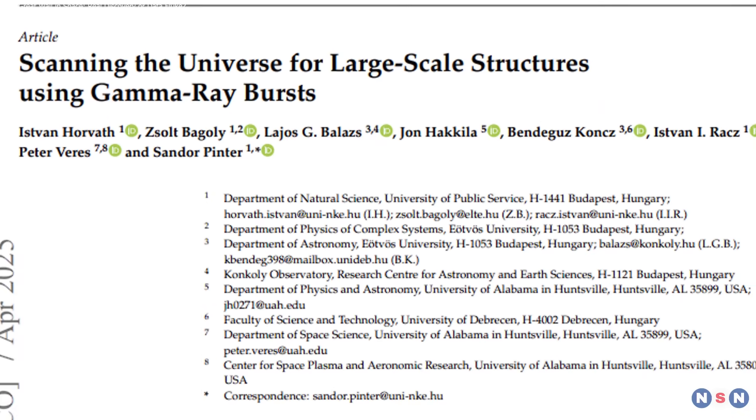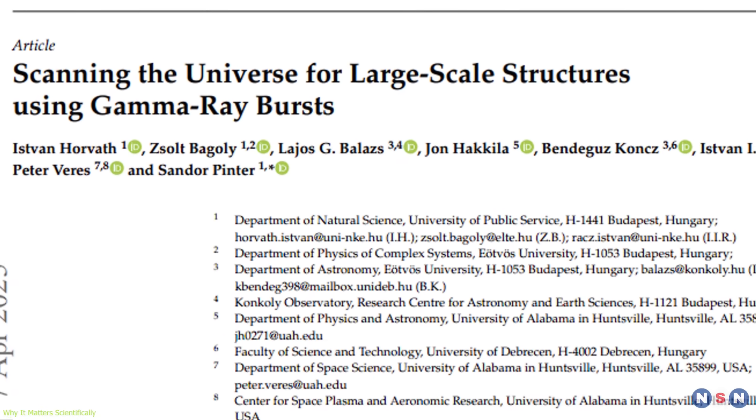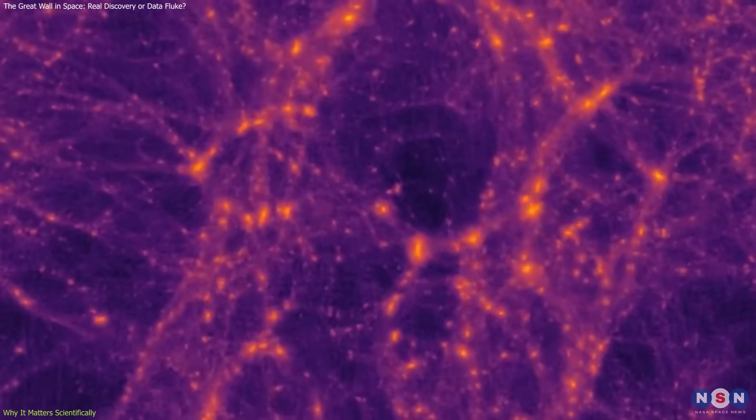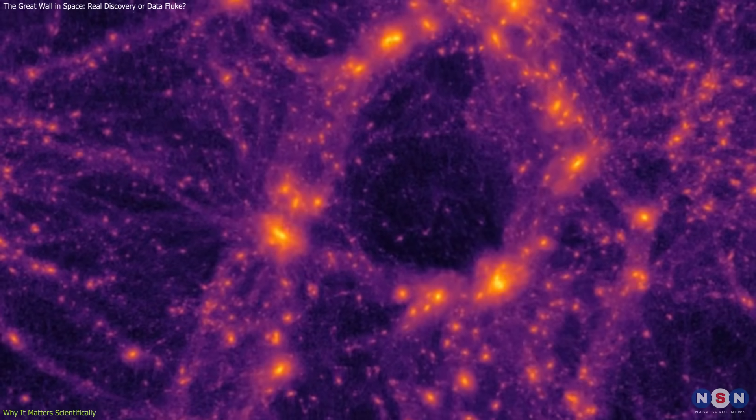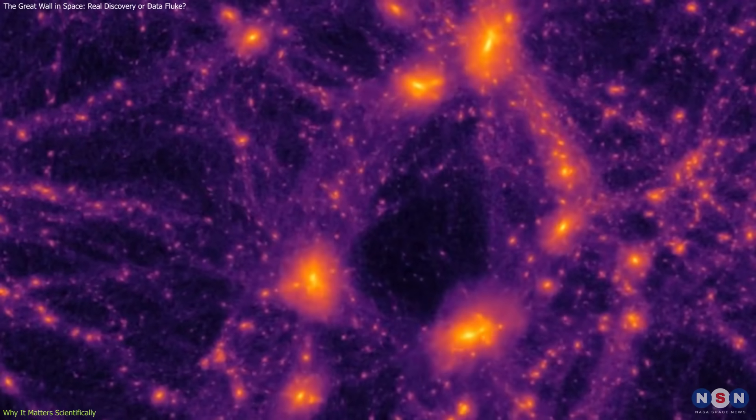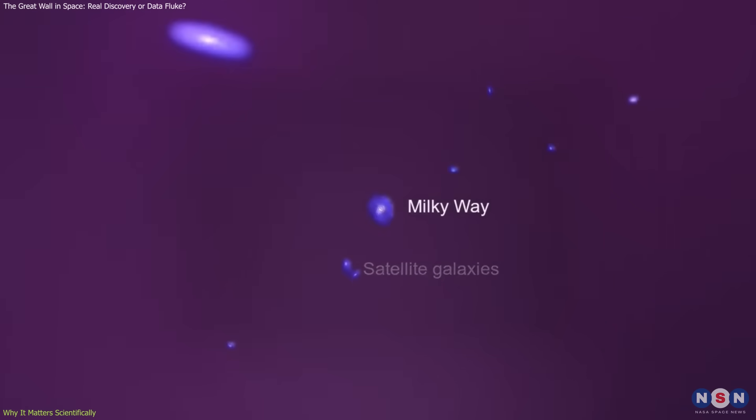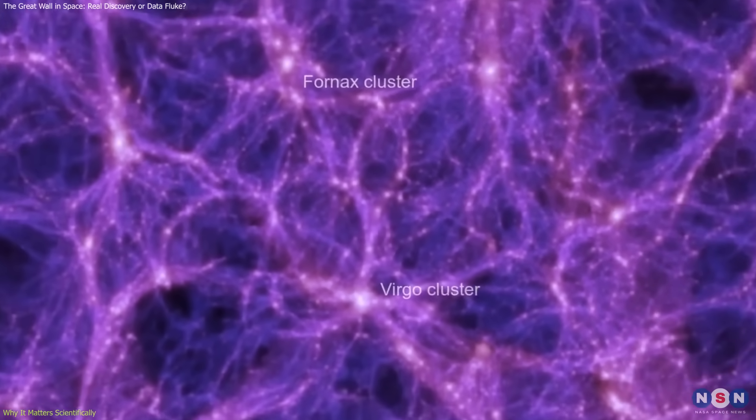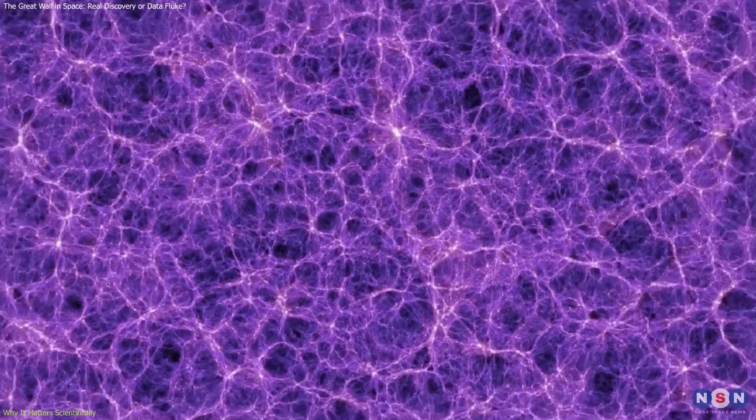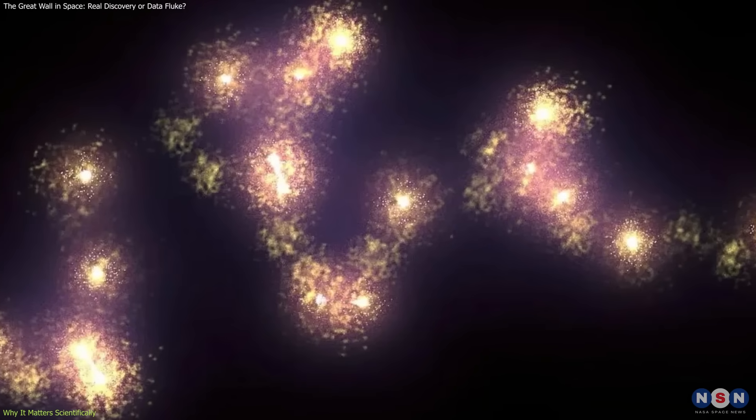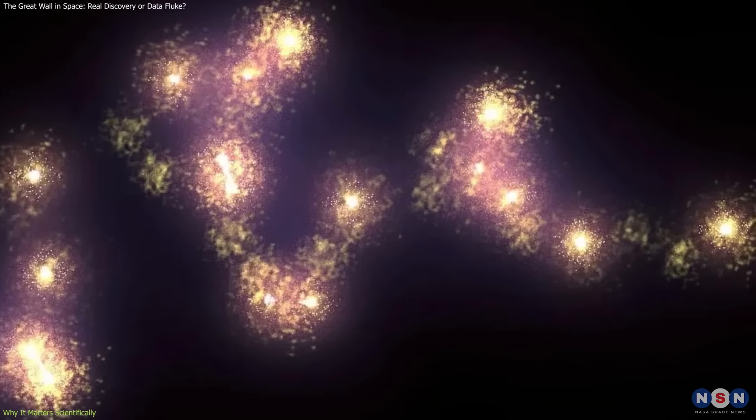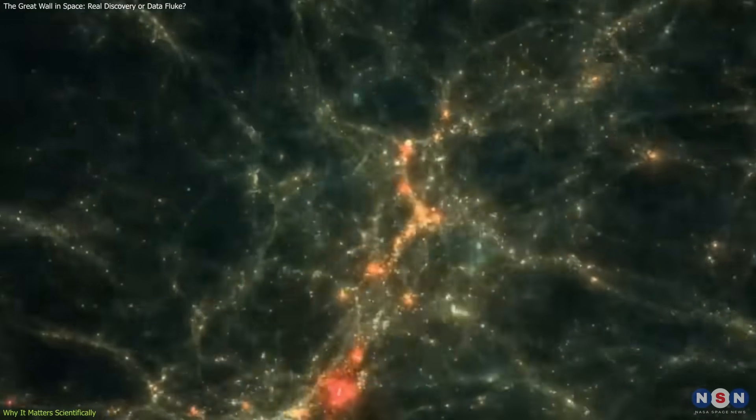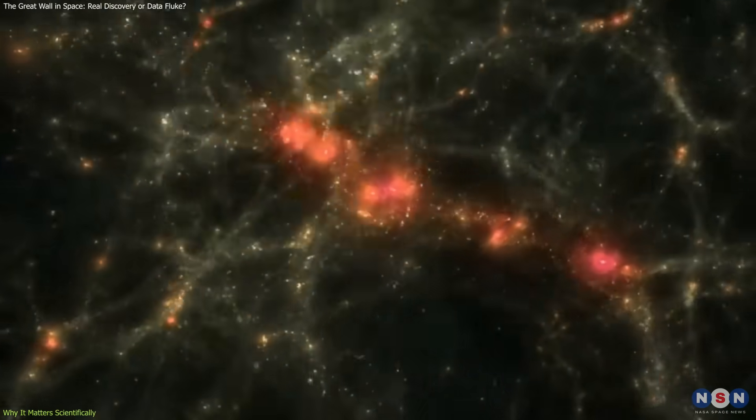At the heart of this discovery lies a conflict with the cosmological principle, a foundational assumption in modern cosmology. This principle states that the universe should be homogeneous and isotropic on large scales. In practice, that means if you zoom out far enough, usually beyond about 1.2 billion light-years, matter should be evenly distributed in all directions. The Hercules-Corona Borealis Great Wall exceeds that scale by nearly an order of magnitude. If confirmed, it could mean that our assumptions about large-scale structure formation are incomplete or incorrect.